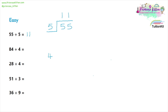Now we can repeat this for question two: 84 divided by four. Four goes on the outside, 84 goes in the middle, then we draw our bus stop. We say: how many fours will go into our first digit, eight? That's two. Then we say: how many fours will go into four? And that gives us one. So 84 divided by four is 21.